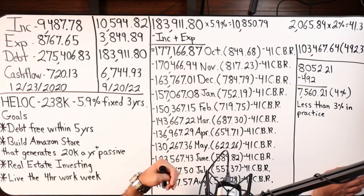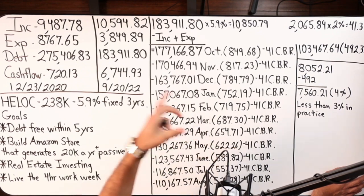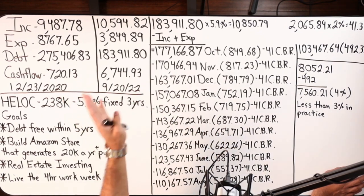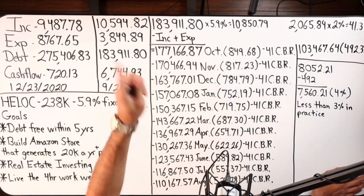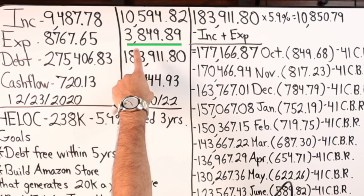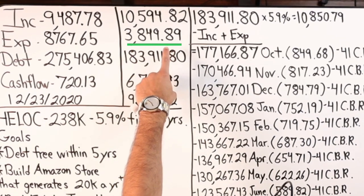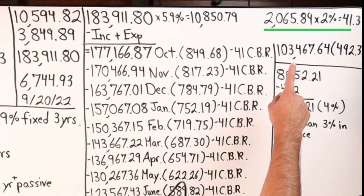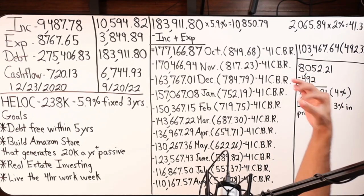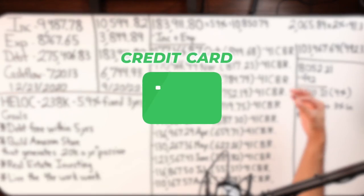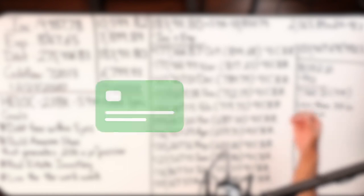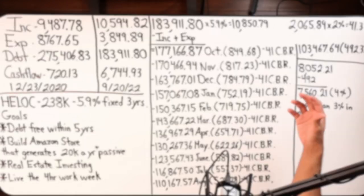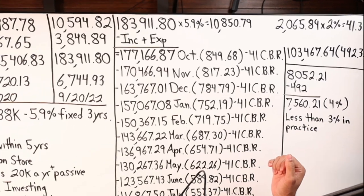They get paid in a series of paychecks and their expenses do not come out in one shot, it comes out over a period of time. On top of that, that $3,849.89, $2,065.89 are bills that can be paid with a credit card where I can get 2% average in cashback rewards which will result in $41.31.